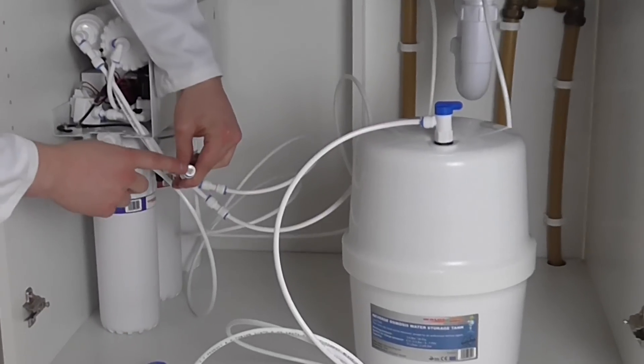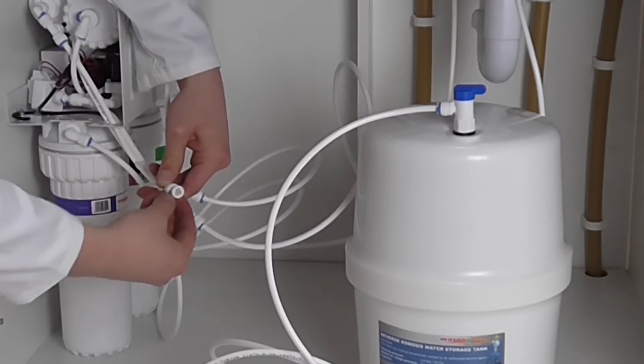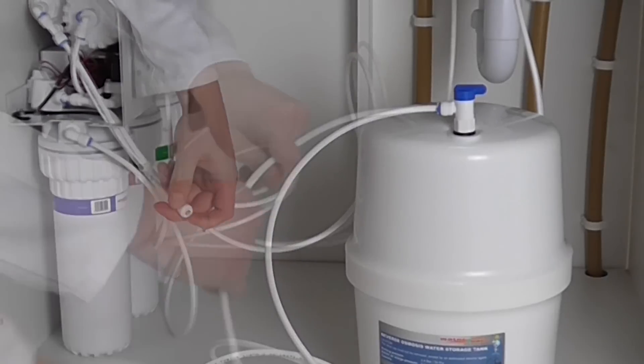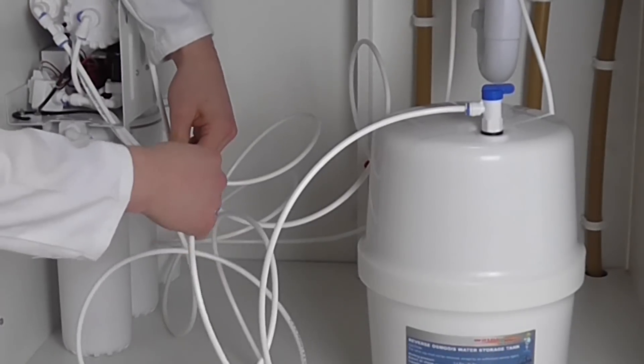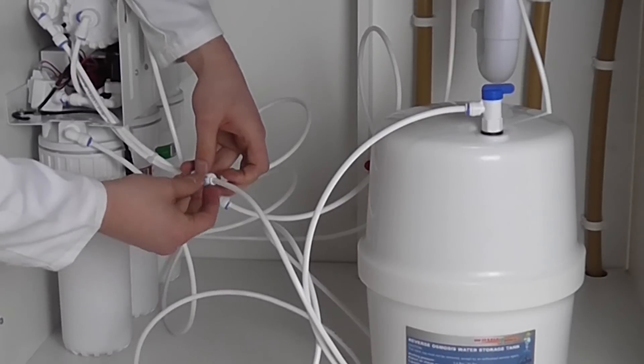Locate the pressure tank connection on the unit, color-coded in purple text. Remove the cap and connect the tubing from the pressure tank. Secure with a blue clip.